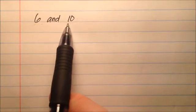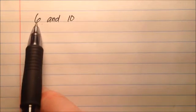In these examples, we're going to be finding the least common multiple of two whole numbers less than or equal to 12. So in this first example, we're going to be looking for the least common multiple of 6 and 10.